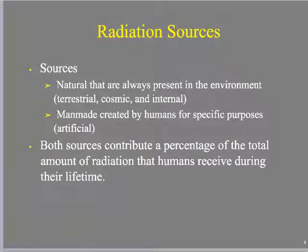Where does this stuff come from? There are naturally occurring radiation sources — part of the environment. There are terrestrial sources; spring water has some amount of radioactivity in it. There's cosmic radiation, as well as internal radiation. And there are also man-made, artificially produced types of radiation.